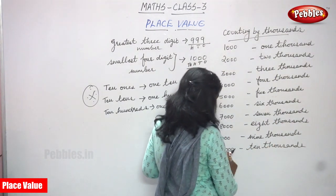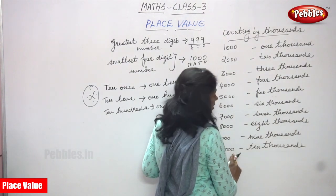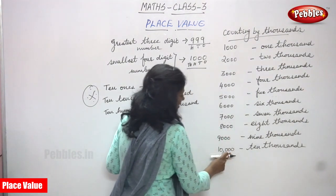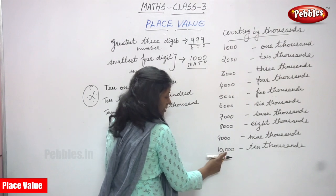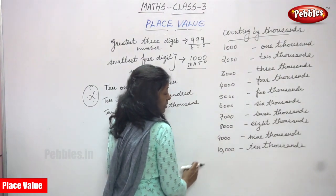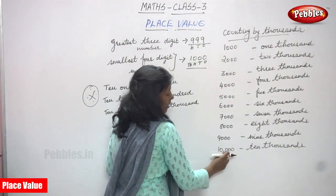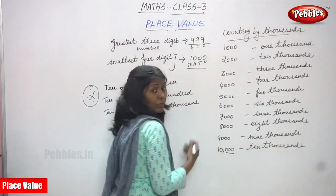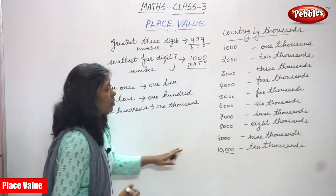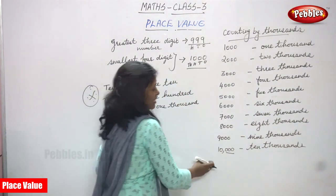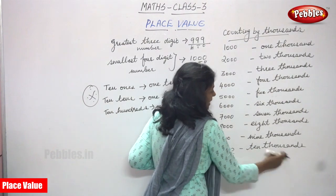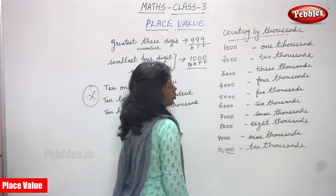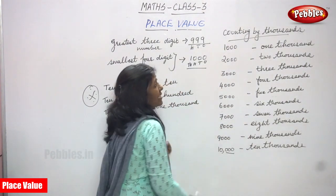After nine thousand, you write ten after three zeros — that is called ten thousands. In the Indian system, you leave the last three digits and put a comma before the next two digits. That is the Indian method — so ten thousand is written with a comma separating digits in the Indian system.